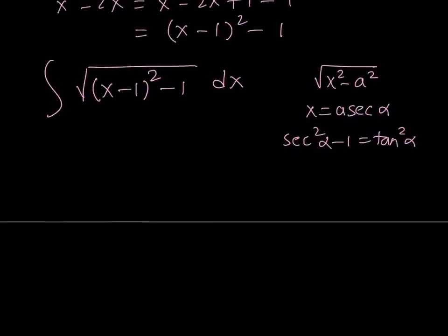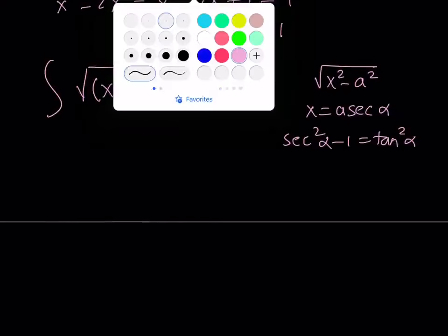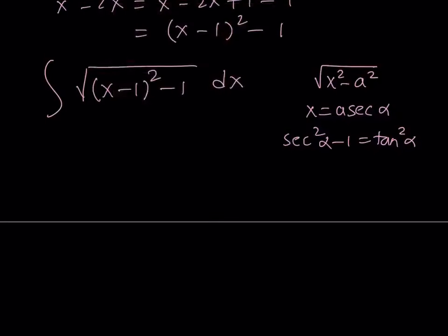So now let's go ahead and replace x minus 1 with secant alpha. In this case our a is 1 because we're subtracting 1 squared. Now let's go ahead and isolate x because we want to find dx from here.